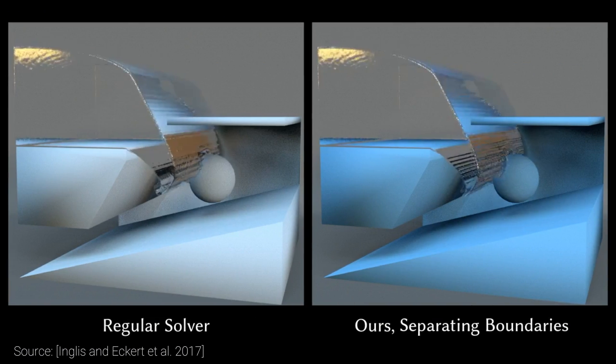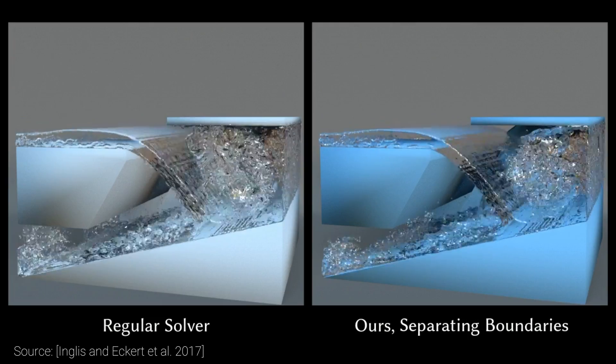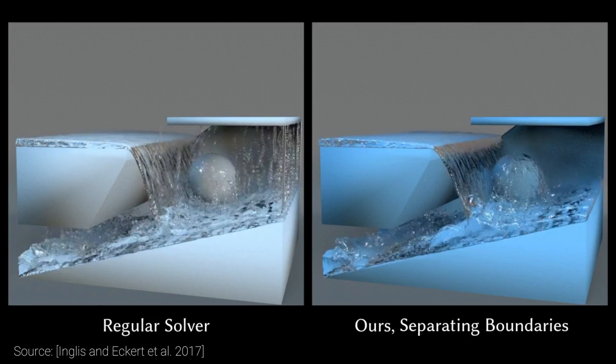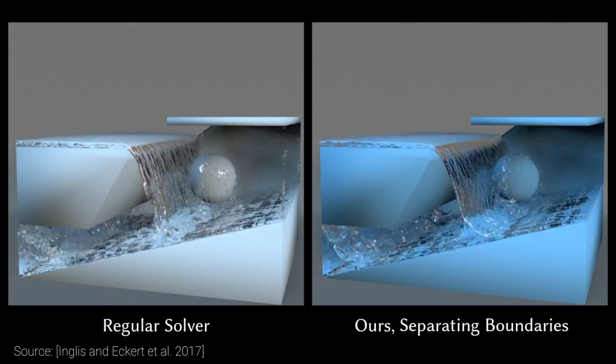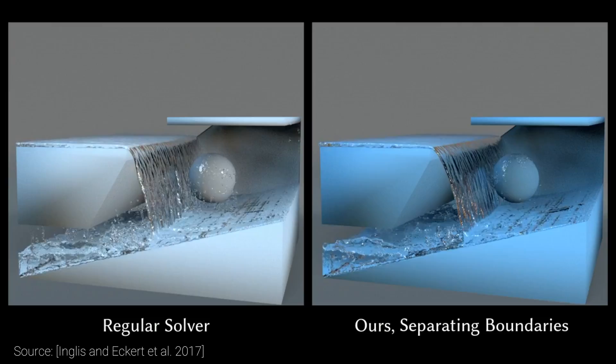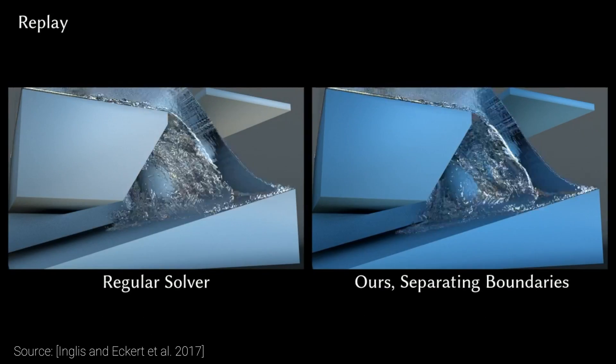And number two, it also accomplishes something that we call separating boundary conditions, which prevents imprecisions where small fluid volumes are being stuck to walls.